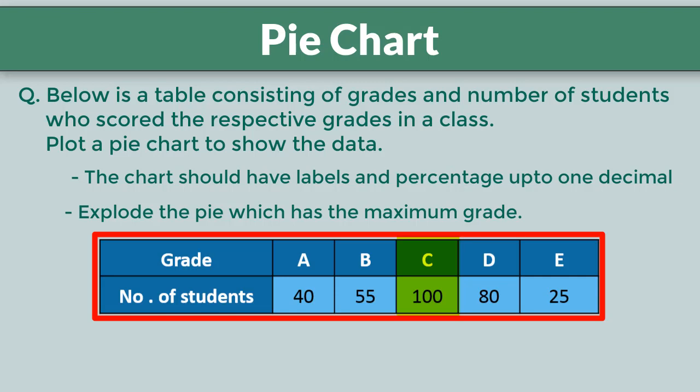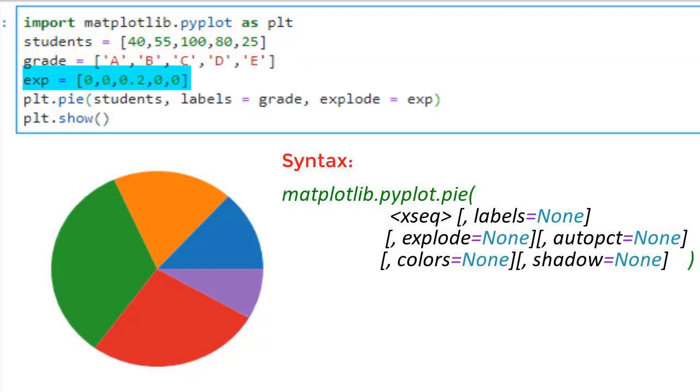But what do we put in this sequence? It expects a sequence of zeros of same length as data with distance in decimal at the slice which we want to explode. So we will add this sequence too to the pie function.